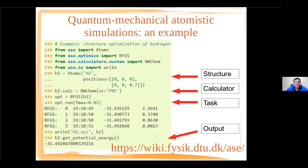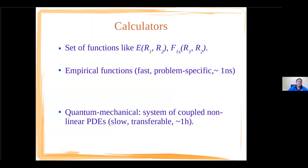The most important thing of all is the calculator. Calculators are functions that give you the energy of the system, forces on atoms, or other similar properties as a function of positions. There are two general categories of calculators. The first is empirical functions — like, for example, Hooke's law, where potential energy is one-half K times X squared. These are very fast but problem-specific. If you know the spring constant for one chemical bond, this will work only for this bond and for nothing else. Even for a given bond, you might have several different spring constants.